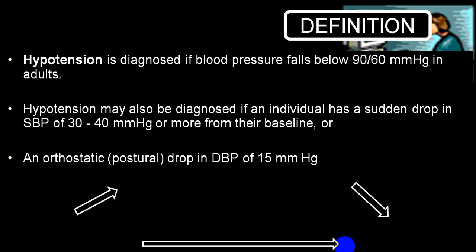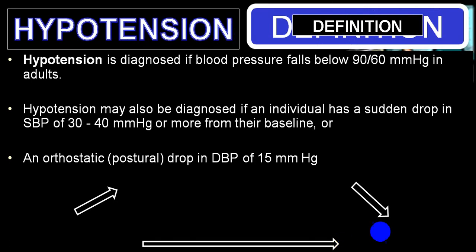A good number of times you will come across a person whose blood pressure is maintained but you feel they are deteriorating — pick up those cases. These are called critically ill patients. Hypotension is when blood pressure falls below 90/60. You will come across patients whose blood pressure is maintained at 110/70 or 100/70, but who were admitted with 130/70 or 120/70, now heading towards 90/60. These patients are deteriorating — we call them critically ill.